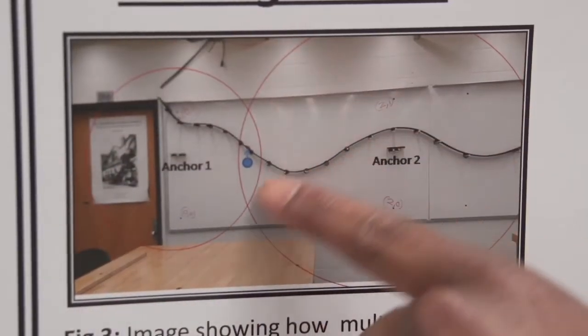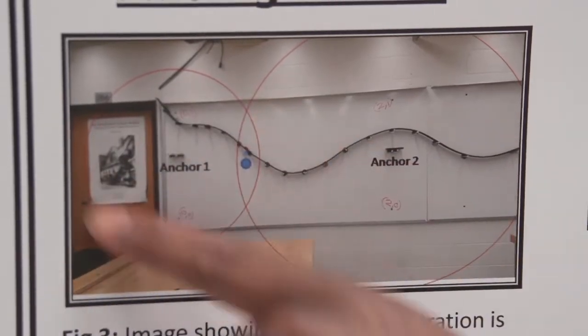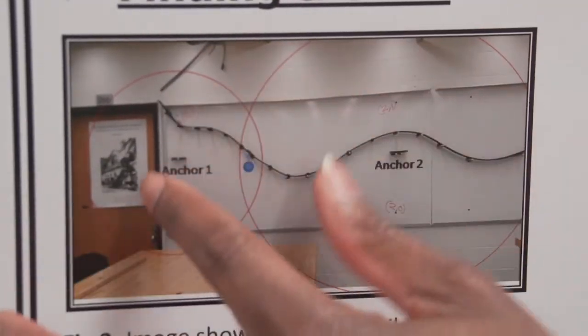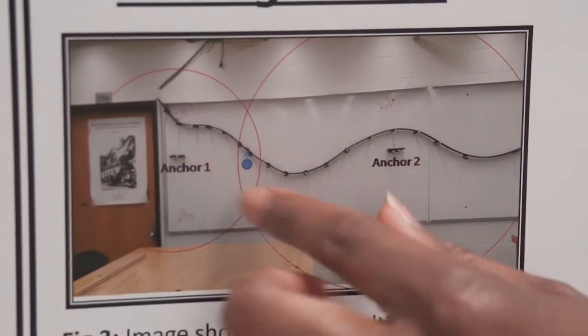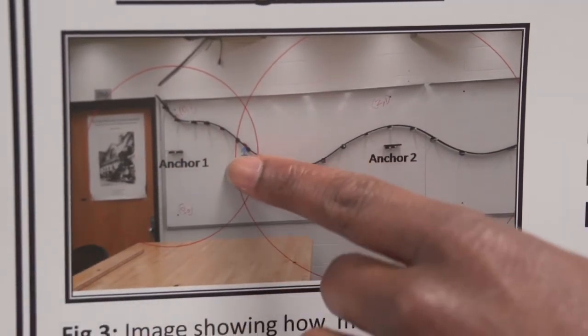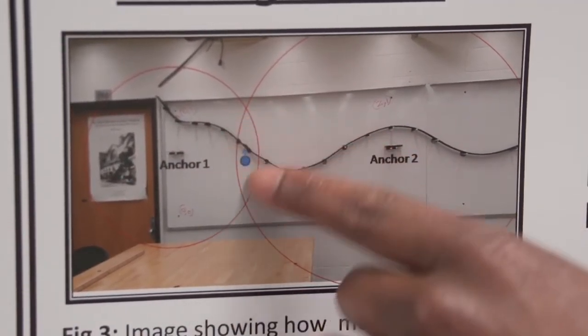Anchor 1 will have a signal strength right there. Anchor 2 will have right there, and based on the difference in distances where it intersects, we'll be able to tell that the cart is somewhere within the circle.